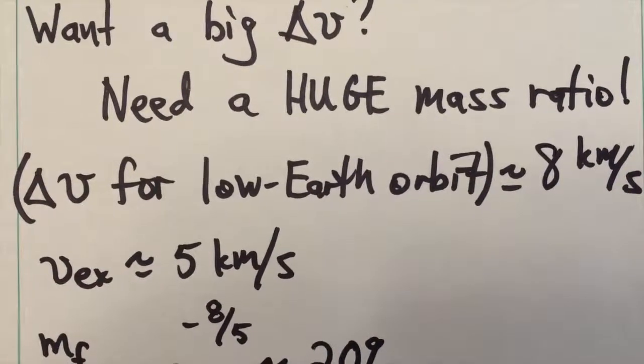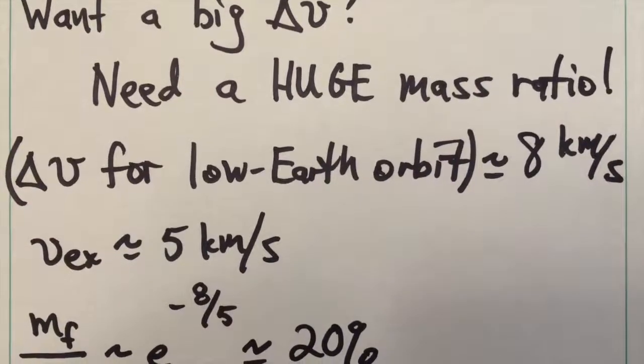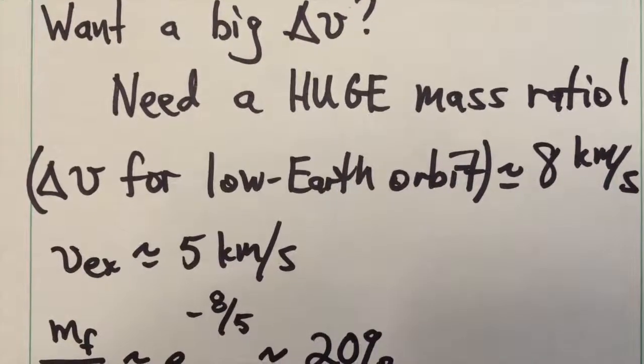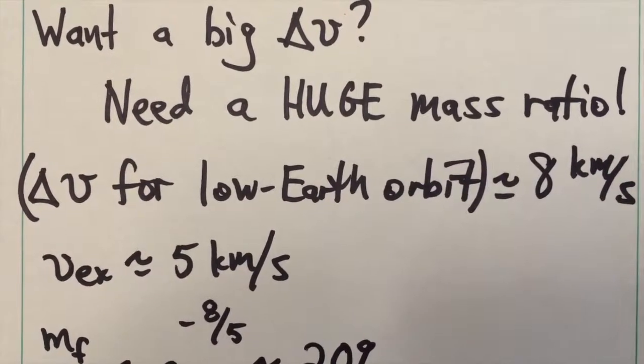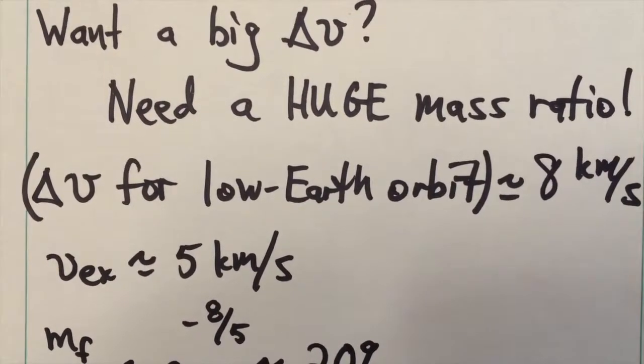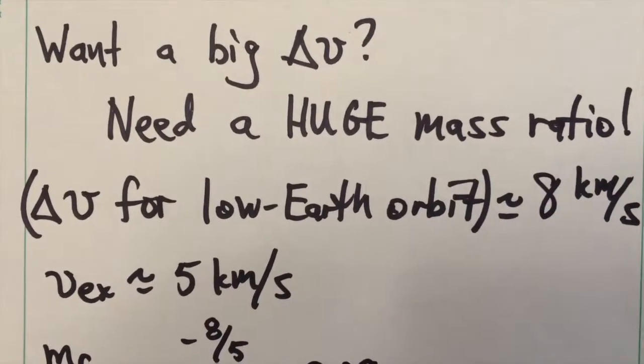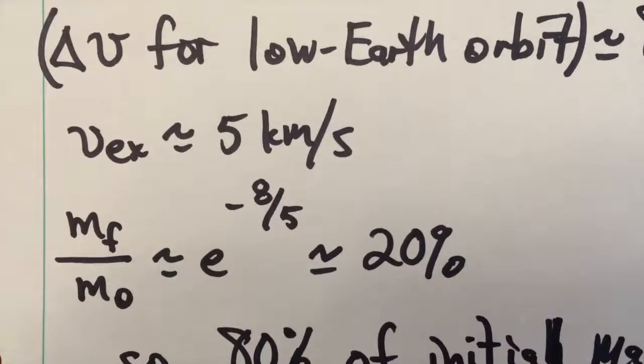So a typical delta v for low Earth orbit, to put a spacecraft into orbit at an altitude of about 160 kilometers, the delta v required is about 8 kilometers a second. A typical exhaust velocity for a rocket is about 5 kilometers a second.